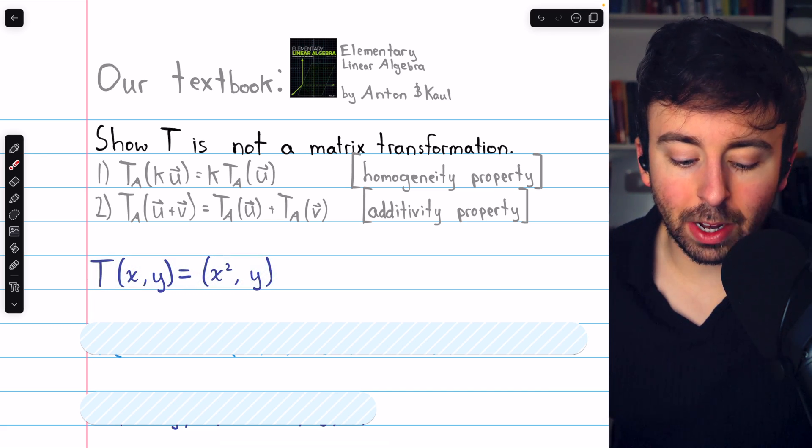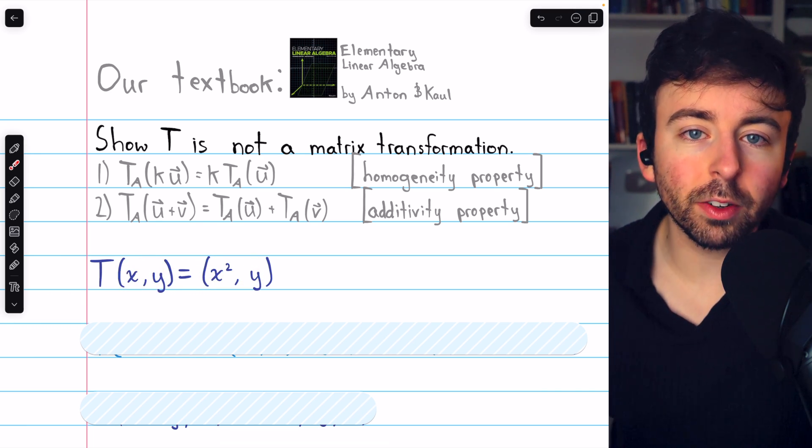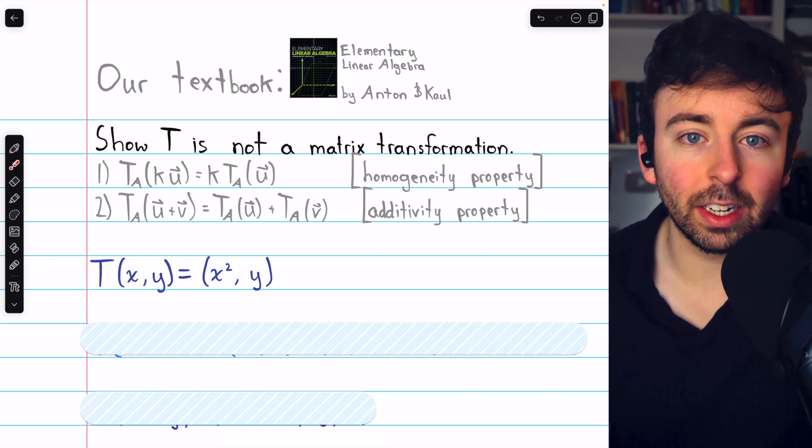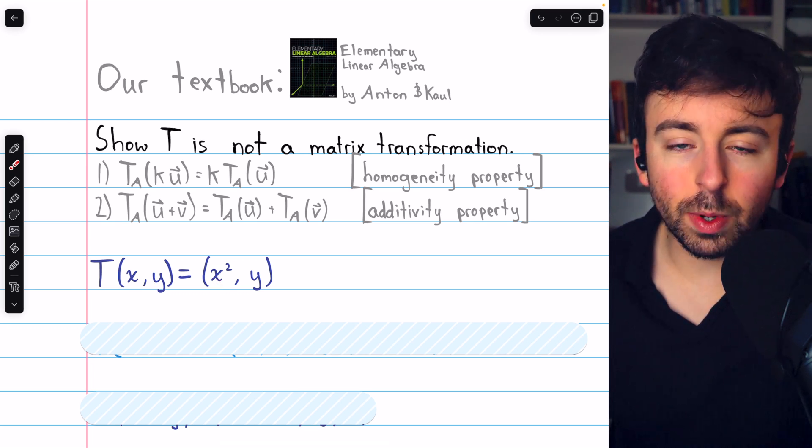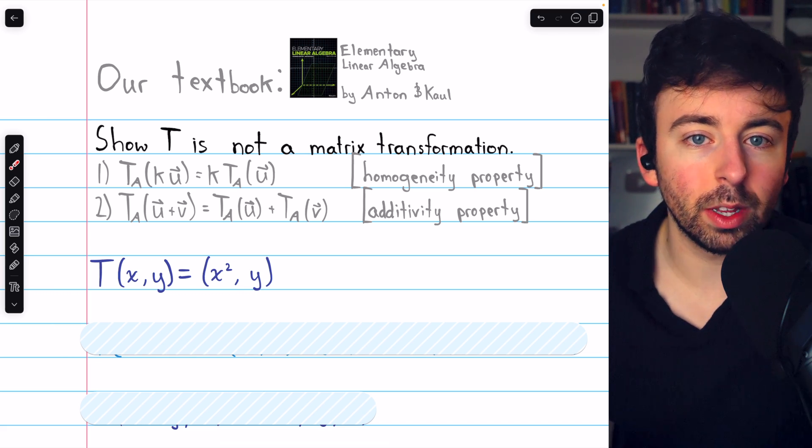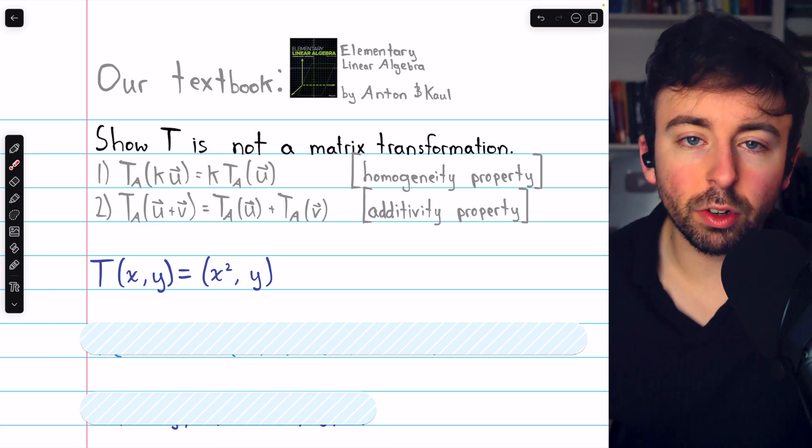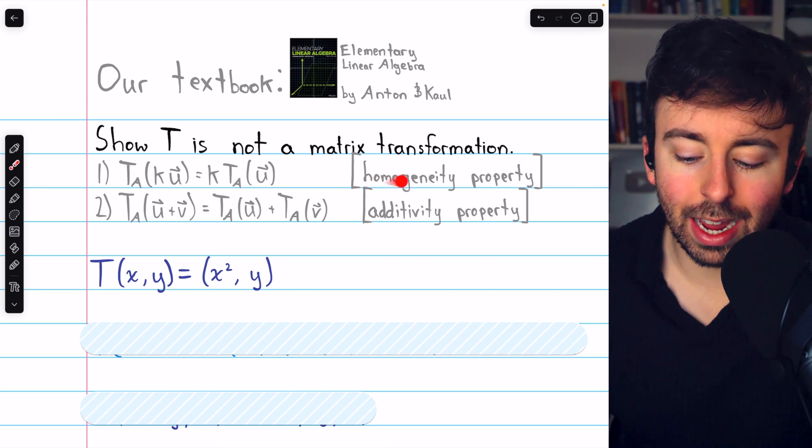Here's our first transformation. This transformation takes vectors in R² and sends them to another vector in R². Just at a glance, it doesn't appear like a matrix or linear transformation because of the x² term. And we can easily prove that in fact it is not a matrix transformation by showing that it doesn't follow either of these two properties. Let's show that it doesn't satisfy the homogeneity property.